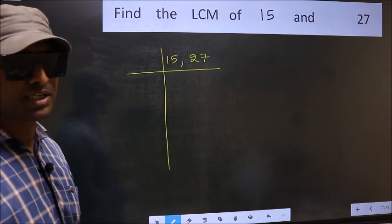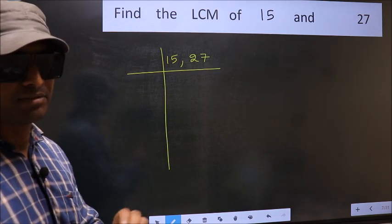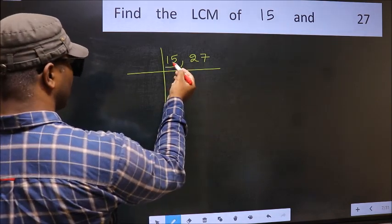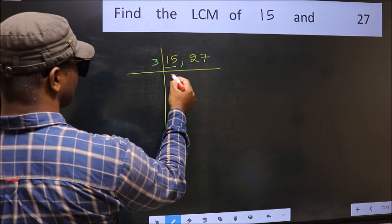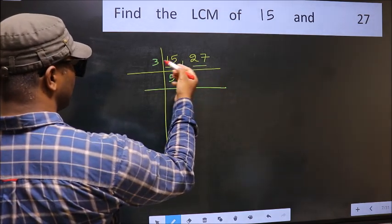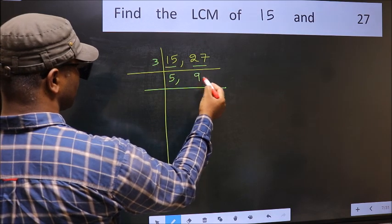Now you should focus on the first number, which is 15. 15 is 3 times 5 equals 15. The other number, 27. When do we get 27 in the 3 table? 3 times 9 equals 27.